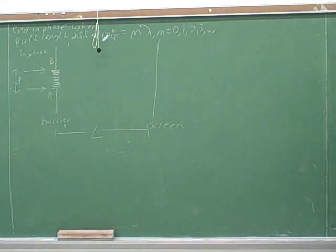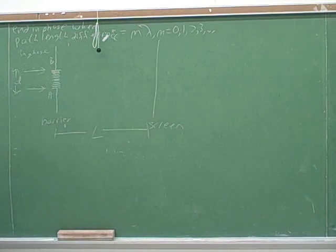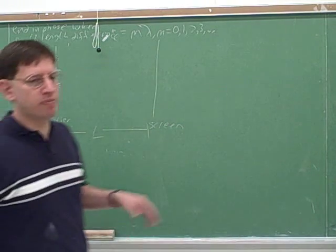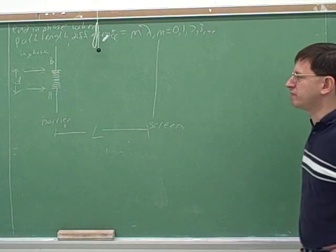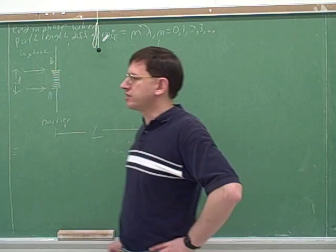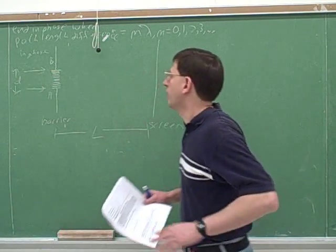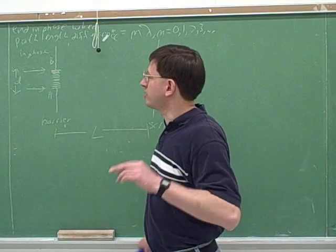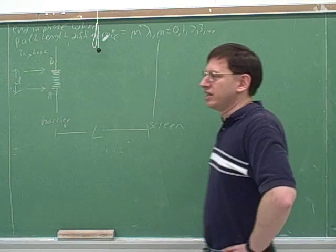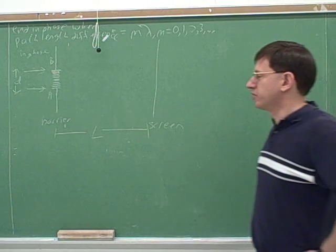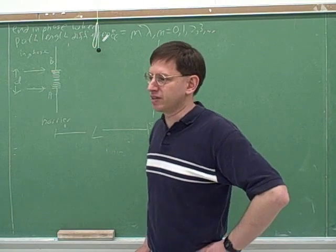So we've only talked about the simplest case of interference. Interference happens when you have two separate beams of light coming together, because then the two separate beams of light could either constructively or destructively interfere. Actually, interference happens when you have two or more beams of light coming together. So if you have three or four beams of light coming together, they could all constructively or destructively interfere as well.